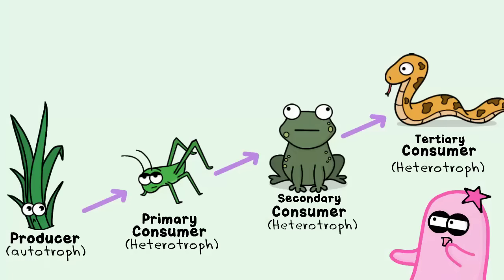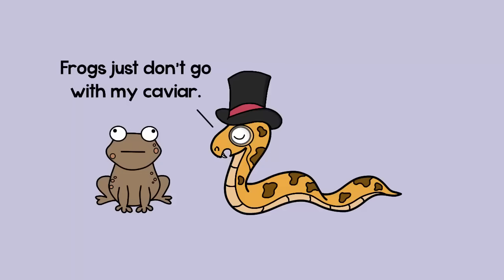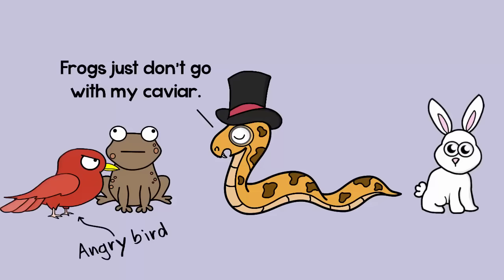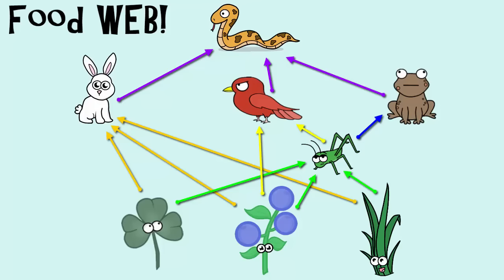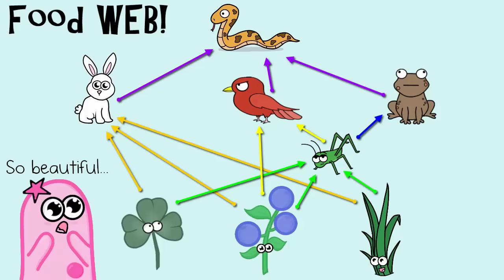This is actually not a very good model because in real life this snake probably doesn't just eat frogs. It probably eats rabbits and birds too, because an ecosystem doesn't typically have a single food chain. Instead, it has more of a food web. A food web is made up of multiple food chains that interact together. Notice how now we have multiple food chains tied in with our original to make a food web. The beauty of a food web is that it shows more interactions among a variety of producers and various level consumers.